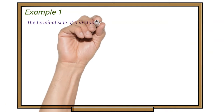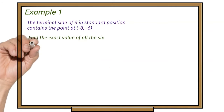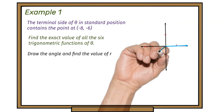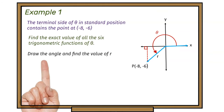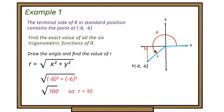Example one: the terminal side of theta in standard position contains the point at minus eight, minus six. Find the exact value of all six trigonometric functions of theta. We draw the angle, label our axes, form a triangle, and put the values into the Pythagorean formula. With x equal to minus eight and y equal to minus six, we find r — the hypotenuse — is 10.